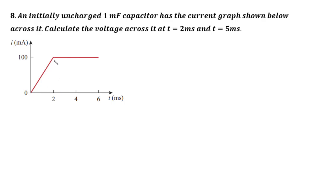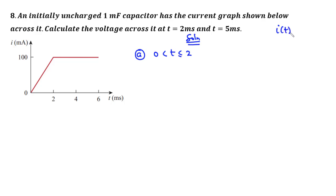Considering this graph, we have two straight lines: from zero to two, and then for t greater than two. This means we are going to have two piecewise functions forming this graph. Like in the previous example, we are going to find two current functions. For the first one, that is for the interval zero less than t less than or equal to two, this is a straight line, so we use the equation i(t) = mt + c. We first try to find the gradient.